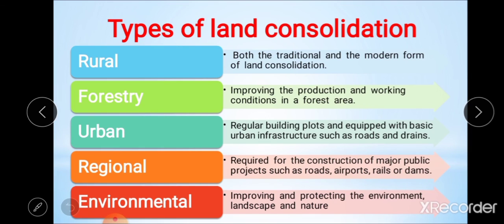After the principles of land consolidation, we see the different types of land consolidation. There are five major types: first, rural land consolidation; second, forestry land consolidation; third, urban land consolidation; fourth, regional land consolidation; and fifth, environmental land consolidation.